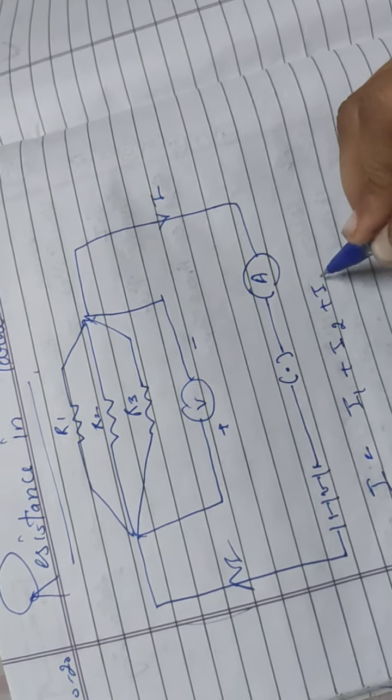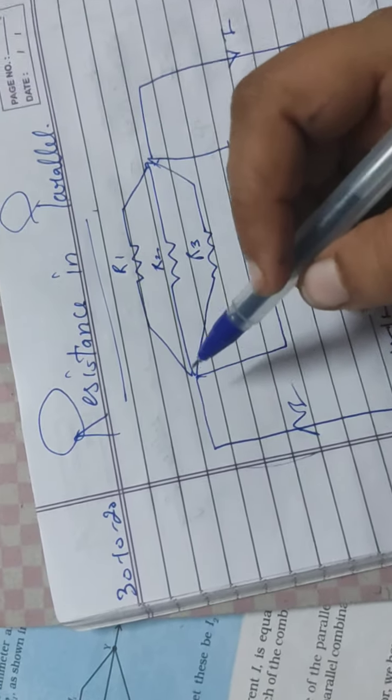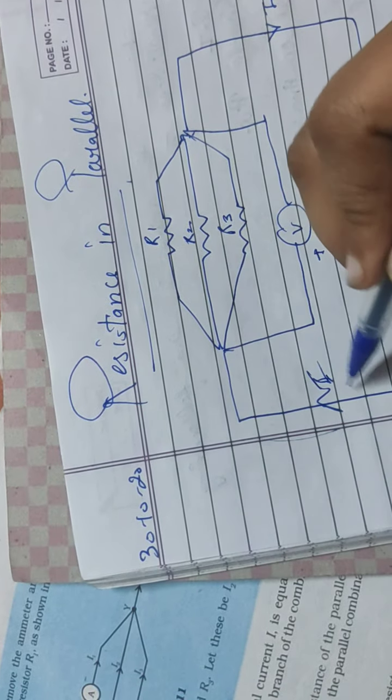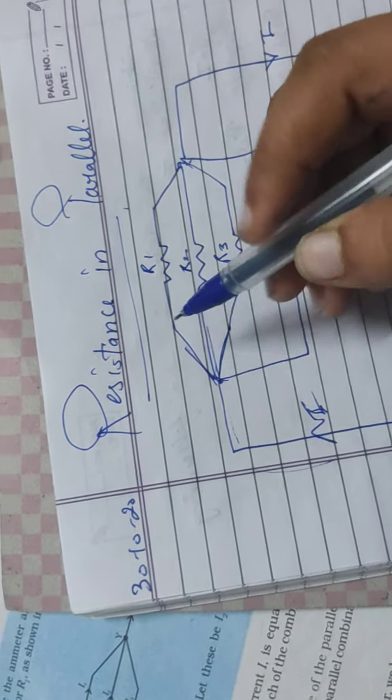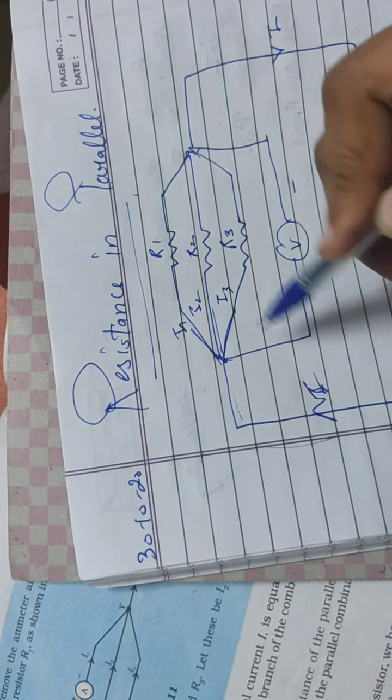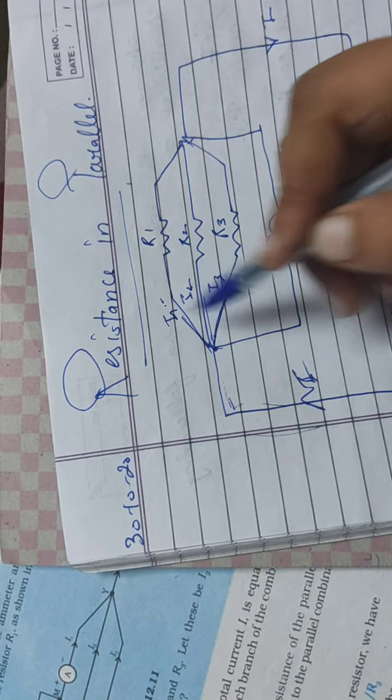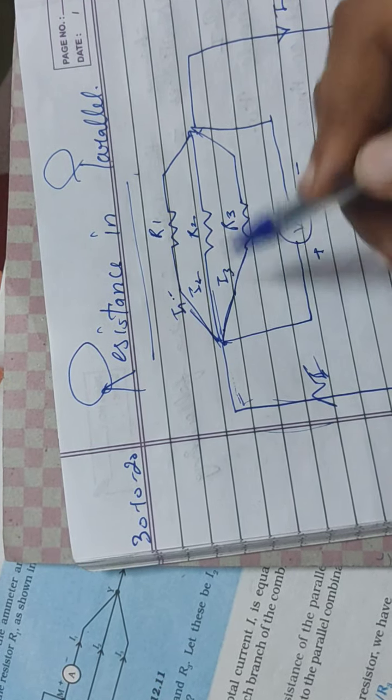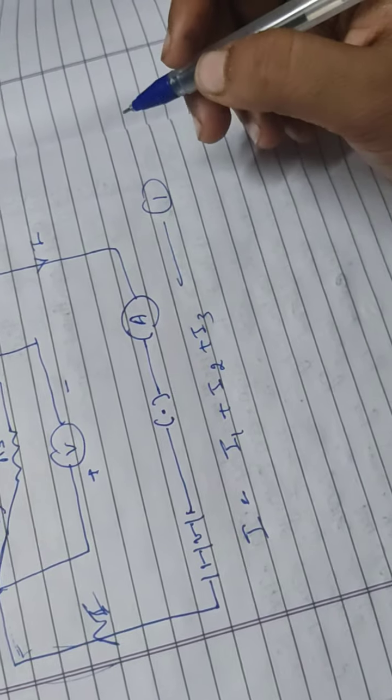The total current is the sum of the small currents. The current will split into three wires - I1, I2, I3. The current I splits into I1, I2, I3. This means I = I1 + I2 + I3.